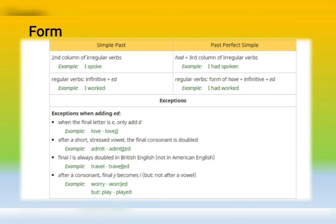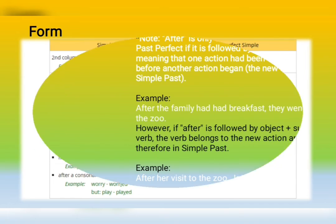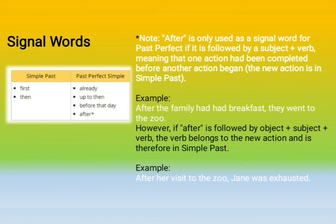After a consonant, final -y becomes -i: worry → worried. Here we have some signal words. For the simple past: first, then. For the past perfect: already, up to then, before, that day, after. Be careful — 'after' is only used as a signal word for past perfect when it is followed by a subject and verb, meaning that one action had been completed before another action in the past.